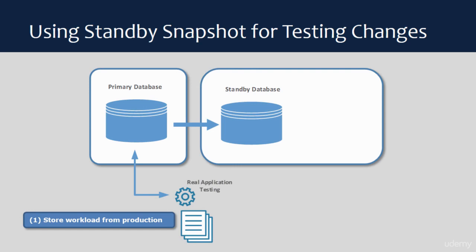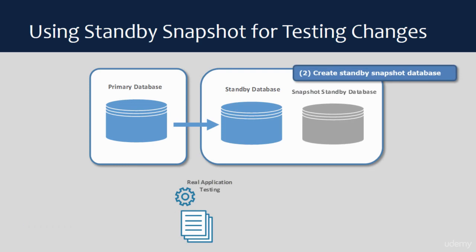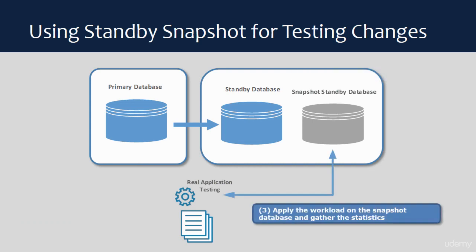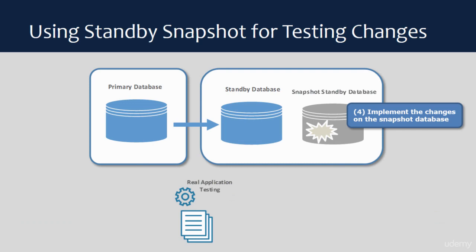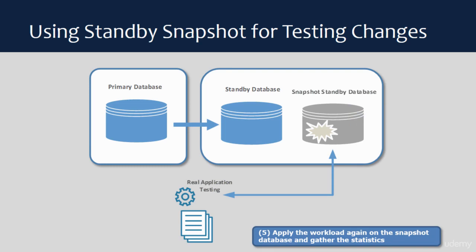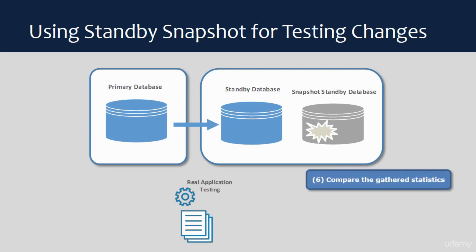During a normal workload, use a testing solution like Oracle Real Application Testing to gather the workload from the production system. On the standby database system side, create a snapshot standby database. Apply the workload on the snapshot standby database and gather the performance statistics. Implement the proposed changes on the standby database system. Apply the workload again on the snapshot standby database and gather the performance statistics. Then study the impact of the change by comparing the performance statistics gathered before and after implementing the changes.